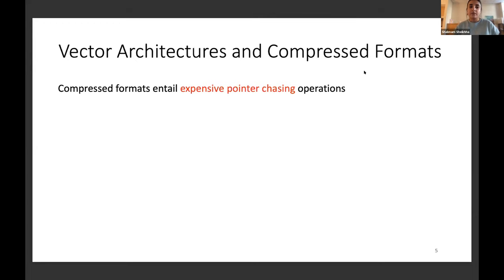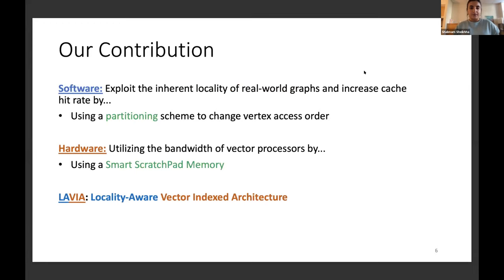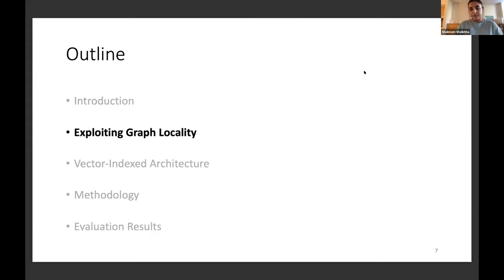Processing compressed formats on vector architectures entails expensive pointer chasing, making DLP irregular. Vector architectures also use expensive scatter-gather operations, increasing memory latency. To overcome this, we propose LAVIA — a novel hardware-software co-design. On the software side, we use a partitioning scheme that exploits the inherent locality of graphs to increase cache hit rate. On the hardware side, we use a smart scratchpad memory that utilizes available bandwidth.